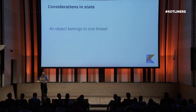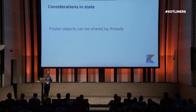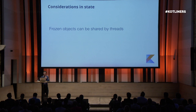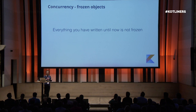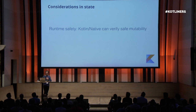Some considerations about state in Kotlin Native. An object only belongs to one thread — it cannot belong to several. If we want to share them, we need a frozen object. A frozen object can be shared across threads — this is a new concept from JetBrains. Frozen essentially means it's super-immutable: the object and all its references are immutable. It's something different you probably haven't dealt with in previous languages. Essentially everything you have written until now is not frozen — it's something you'd start doing when dealing with Kotlin Native. There are no threading primitives such as 'synchronized' or 'volatile'; instead, you should use something like AtomicFU. There is runtime safety, so Kotlin Native can verify safe mutability.